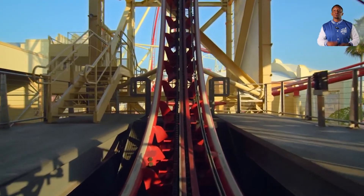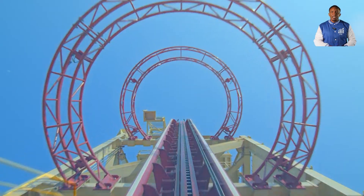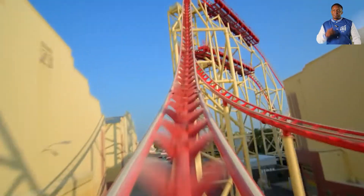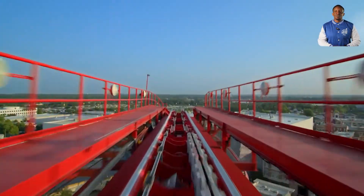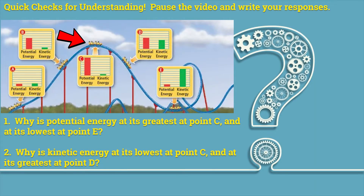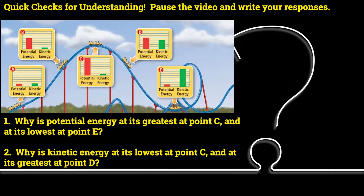Going back to that Rip Ride Rocket ride we rode this summer — that first hill was huge. You could see and feel the chain links pulling us all the way to the top of the hill, where the ride stopped for a brief moment where there was nothing but complete potential energy and no kinetic energy. This allowed us to see the whole entire Universal Studios theme park, and then there was a huge rush of kinetic energy as we went down that first hill. We felt our hearts sinking to our stomachs as we went uphill, downhill, and through loops. We kept going back and forth between potential energy and kinetic energy. Quick checks for understanding: why is potential energy at its greatest at point C and at its lowest at point E? Why is kinetic energy at its lowest at point C and at its greatest at point E? Pause the video and take five minutes to write your responses.